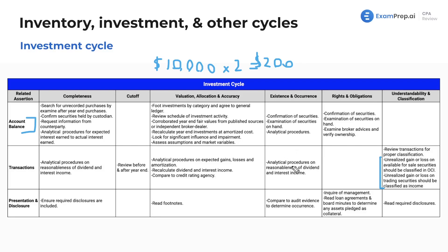For existence and occurrence, perform analytical procedures on the reasonableness of dividend and interest income. For understandability and classification, review the transactions for proper classification — is it a current or non-current investment? We've got different classifications: available for sale, trading, and held-to-maturity securities. Is it properly classified with your intentions? Are your intentions to trade it in the next foreseeable future, are you holding it, or is it available for sale? Also, obviously you're not going to classify investments in stock as debt — make sure to classify properly.